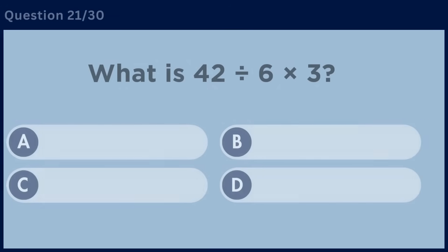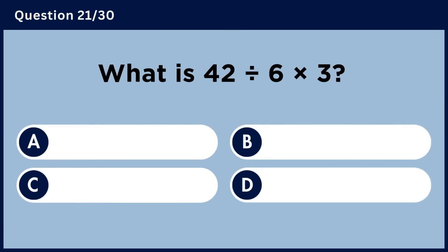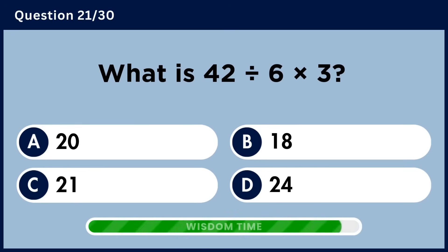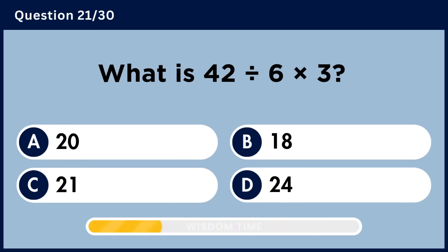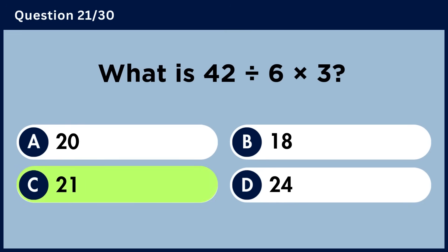What is 42 divided by 6 multiplied by 3? Answer C: 21.